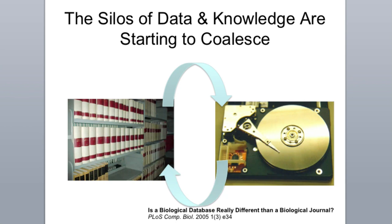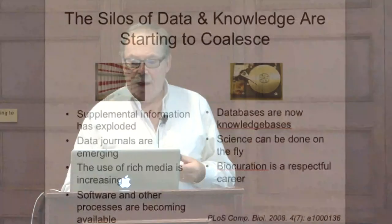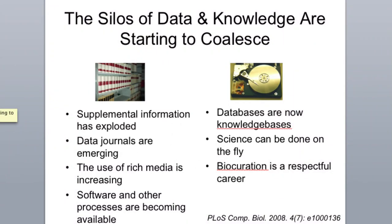Let's explore the notion of expanding on this with an emphasis on data and where we're going with data. One of the problems — referring mainly to the biosciences — is that we have knowledge coalesced into silos. The majority of knowledge is effectively in the literature, and the majority of the data from which that knowledge is derived is effectively in databases, at least the digital parts of it. They're starting to coalesce in some ways, but they're not fully coalesced. The reasons are partly technical and partly cultural. Supplemental information in papers has exploded, mainly because of all this extra data, and data journals themselves are emerging.